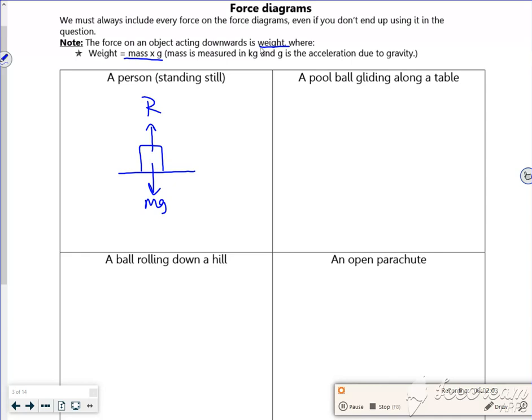Right, so then it says a pool ball gliding across a table. So here's my pool ball: it's got our weight acting down, it's got a normal reaction there, it has acceleration in the direction of travel. Now if it's not smooth there will be a frictional force acting against its direction of movement.